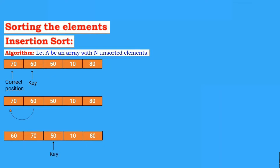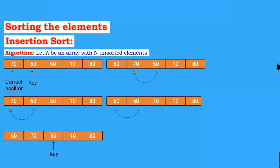Now 50 compares with 70 and 60. First it compares with 70 and interchange takes place — 50 comes in place of 70 and 70 moves to where 50 was. Again, 50 compares with 60. Since 50 is less than 60, interchange takes place. After interchanging, you get: 50, 60, 70, 10, and 80.